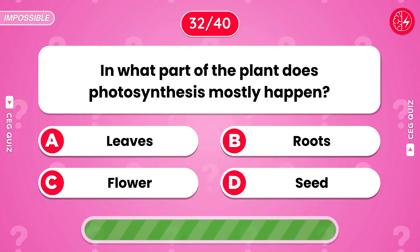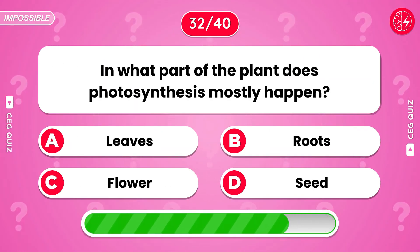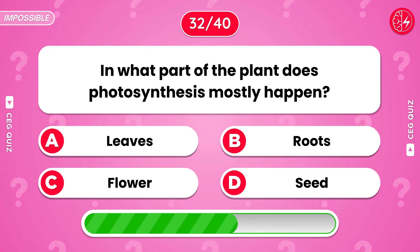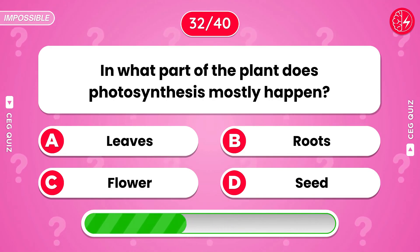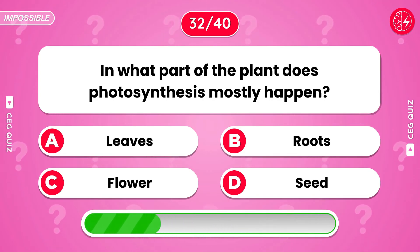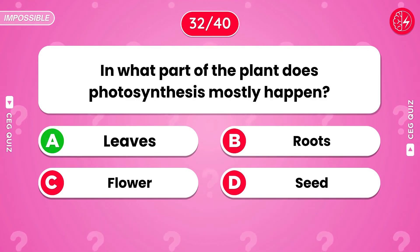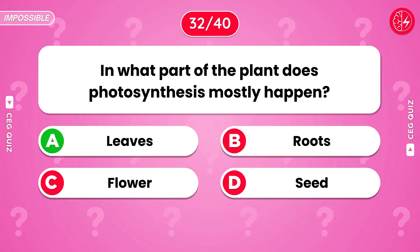In what part of the plant does photosynthesis mostly happen? It's leaves.